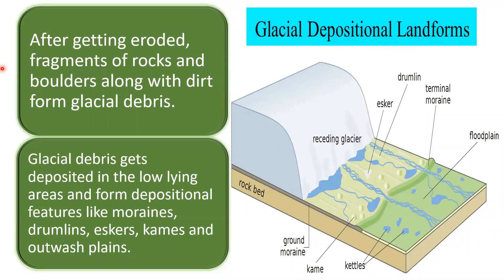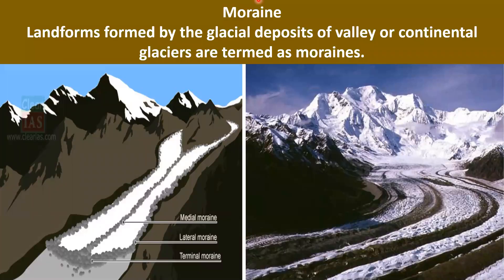Glacial depositional landforms: After being eroded, fragments of rocks, boulders, gravels, and dirt form glacial debris. Glacial debris gets deposited in low-lying areas and forms depositional features like moraines, drumlins, eskers, kames, and outwash plains. Landforms formed by glacial deposits of valley or continental glaciers are termed moraines. Valley glaciers are found on mountains, while continental glaciers are found in the Arctic and Antarctic regions. Moraines found on both edges are called lateral moraines, deposits in the middle are called medial moraines, and those at the end are called terminal moraines.